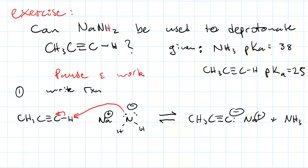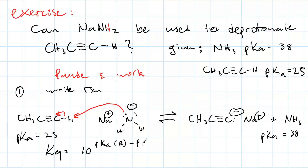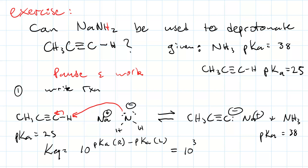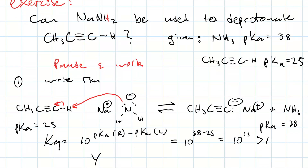Now we write in our pKa values: 25 on the left and 38 on the right. Using the formula we derived, Keq equals 10 to the pKa(right) minus pKa(left), which gives us 10 to the power of 38 minus 25, or 10 to the 13th. That's greater than 1, so the answer is yes — sodium amide can be used to deprotonate propyne.